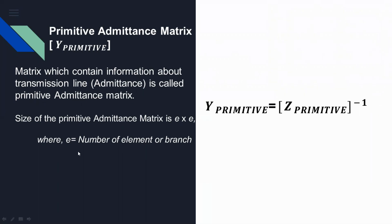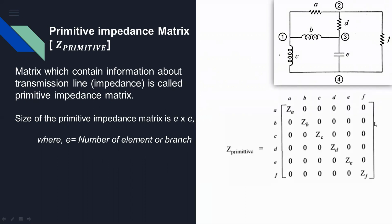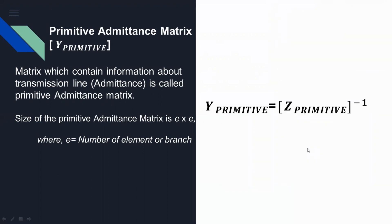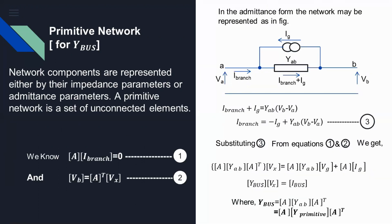This matrix is called the Z primitive matrix. The primitive admittance matrix is a matrix which contains information about admittance; its size is also e×e (number of branches × number of branches). This matrix is simply obtained from the Z matrix by taking the inverse. Because the off-diagonal elements are zero, you just take the inverse of each diagonal element: 1/Za, 1/Zb, 1/Zc, ... 1/Zf. No need to calculate the adjoint or determinant — just invert each diagonal element to get the Y primitive matrix.